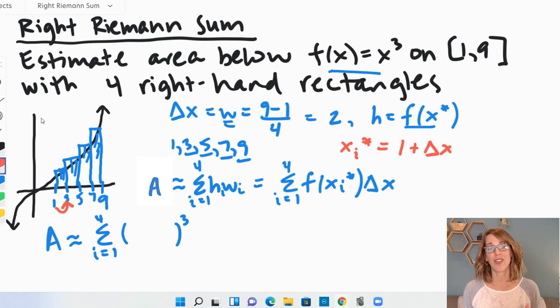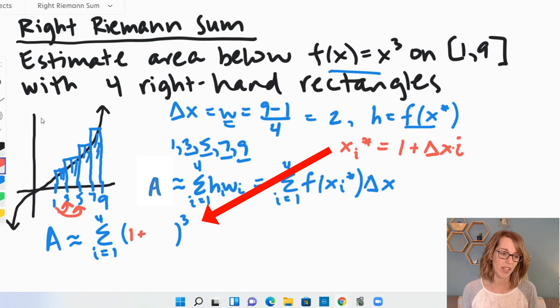1 plus another delta x. So 1 plus 2 delta x's over here in my diagram is going to get me to 5. 1 plus 3 delta x's and so on. So I want 1 plus these delta x's times i. That's going to go in right here: 1 plus delta x times i.